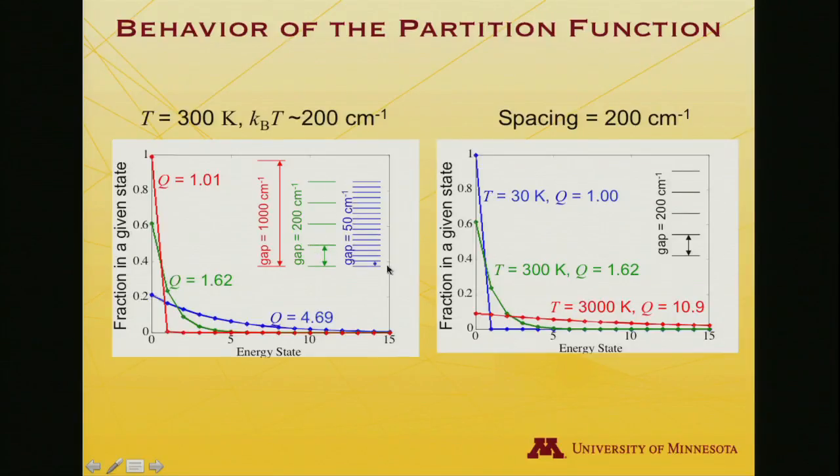Finally, what if I shrink the gap still more? I make the gap 50 wavenumbers. Well, now as I evaluate the contributions to the total partition function, it adds up to 4.69. So getting bigger, many more accessible states. Note that the number itself doesn't mean there's only 4.69. You can't have a fractional state, but anyway, you certainly go beyond that value in terms of some population.